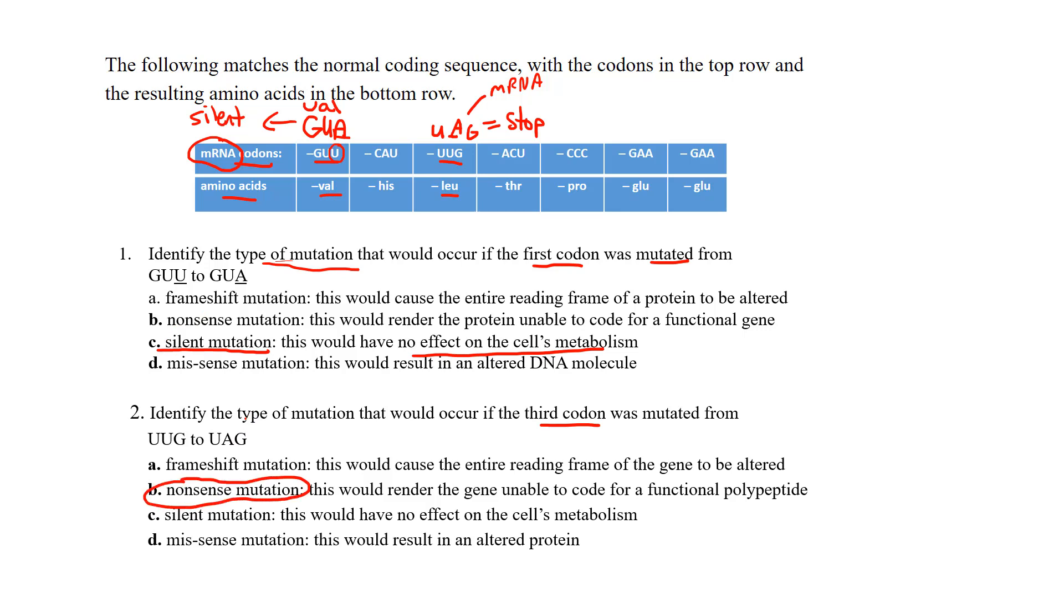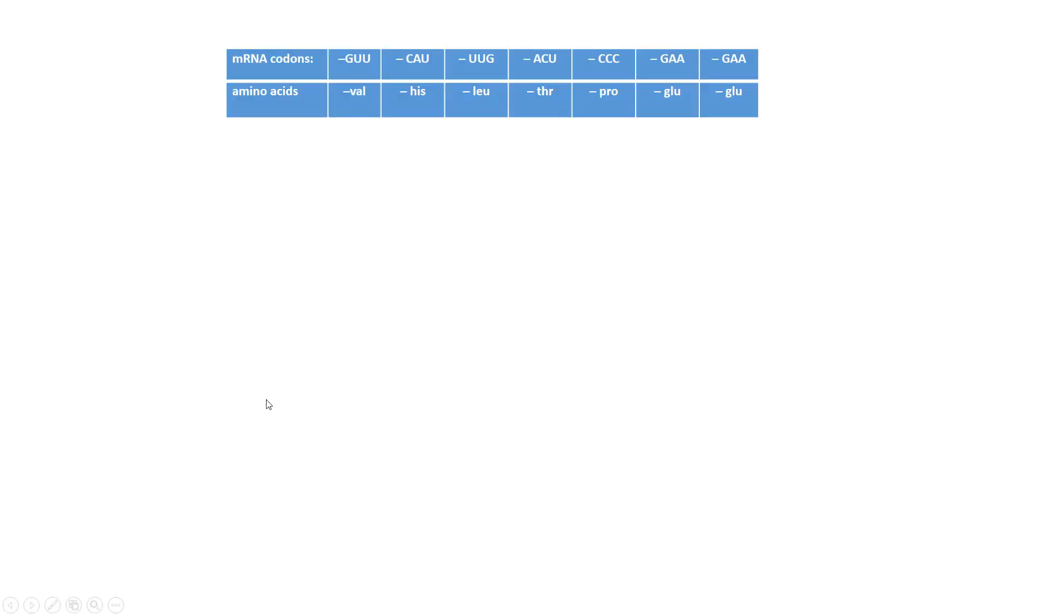So that of course when you have a premature stop is called a nonsense mutation. That protein makes no sense whatsoever because you stopped assembling the amino acids that were necessary in order to get a functional protein.